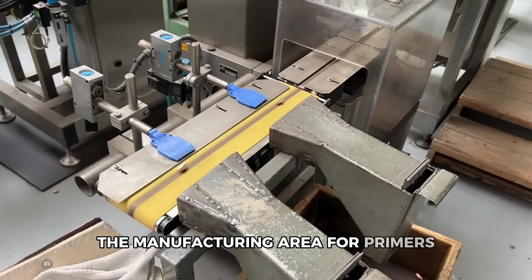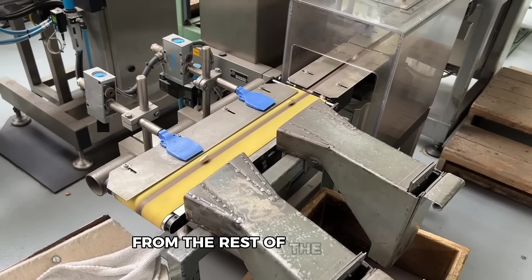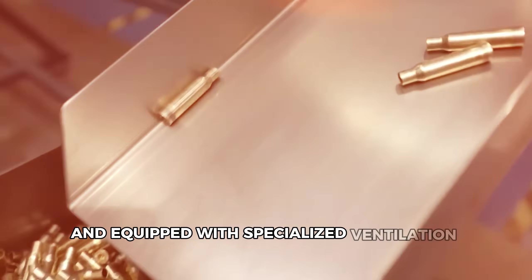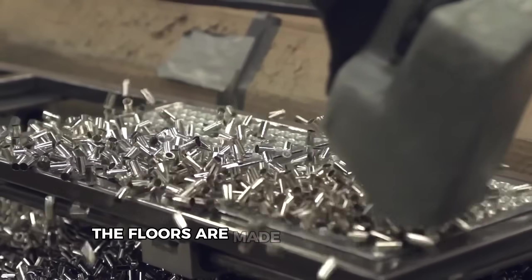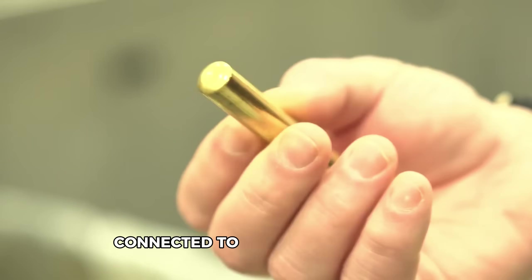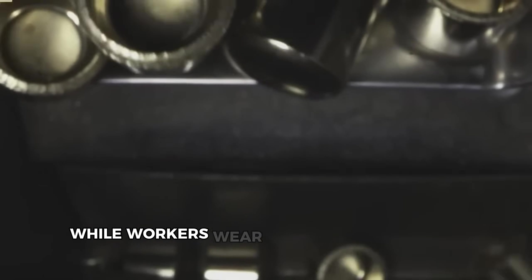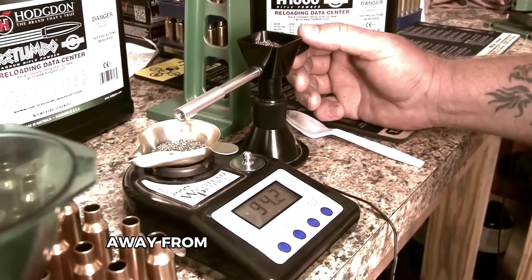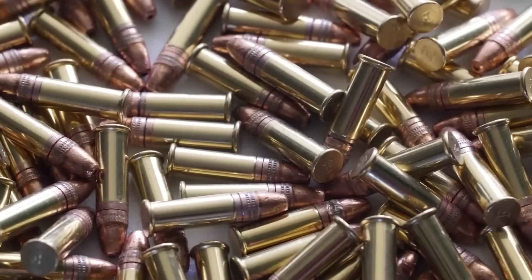The manufacturing area for primers looks completely different from the rest of the factory. It's physically separated and equipped with specialized ventilation systems. The floors are made with conductive materials connected to grounding systems, while workers wear special clothing and footwear designed to safely channel any static electricity away from the sensitive materials.